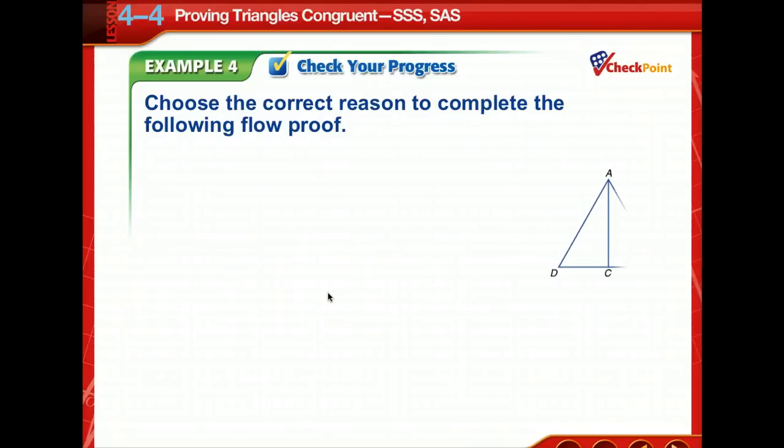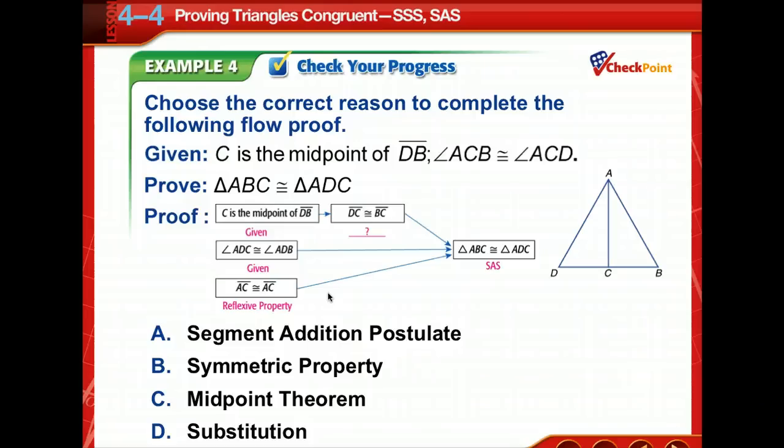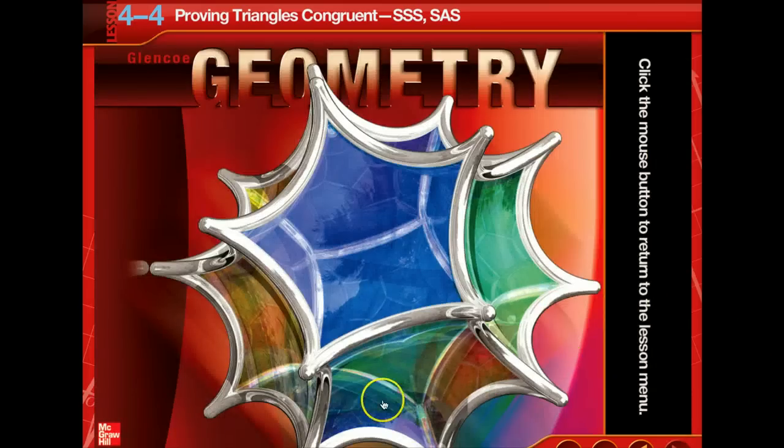Very good. Time to check your progress. Choose the correct reason to complete the following flow proof. Okay. So pause for a moment. Study what they're giving you. Notice we're trying to prove by side, angle, side. So if you re-sketch this diagram on your paper and then make little markings on what's being proved congruent already, you see what you have left to do. You're wanting to prove DC is congruent to BC. Which theorem? Yes. If we're told that C is the midpoint of DB, then we know that DC is congruent to BC by the midpoint theorem. So there we've got that other side. So by side, angle, side, we can say that these two triangles are congruent. Very good. You're ready to get on with the lesson.